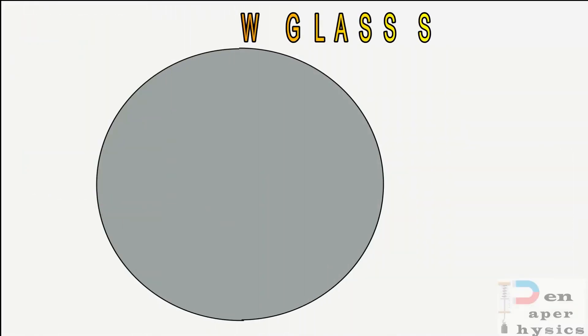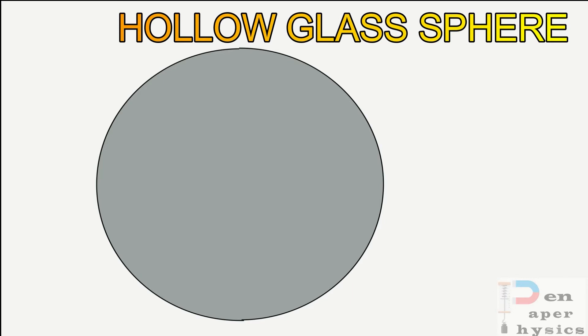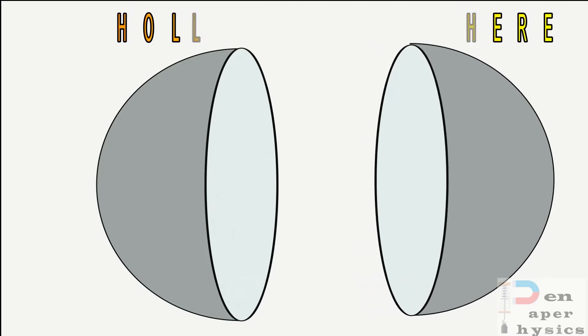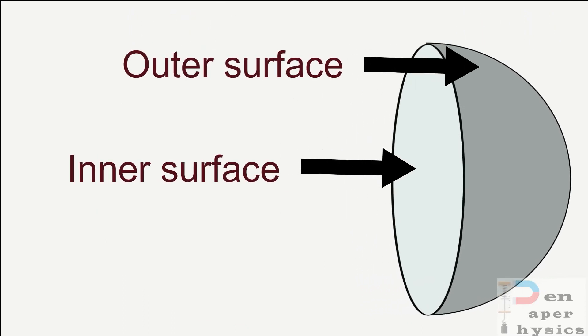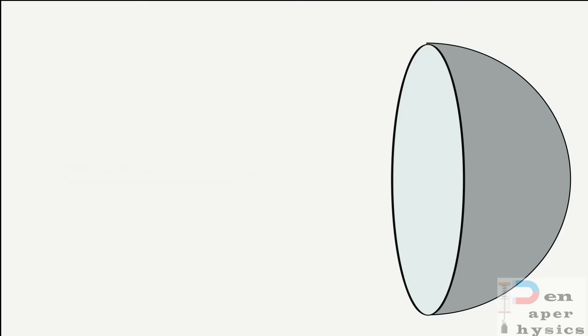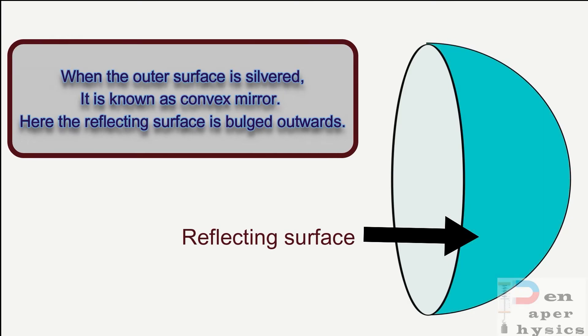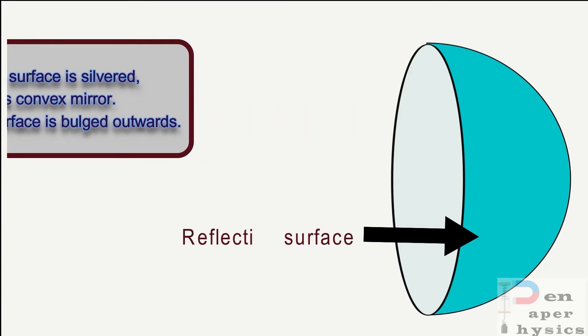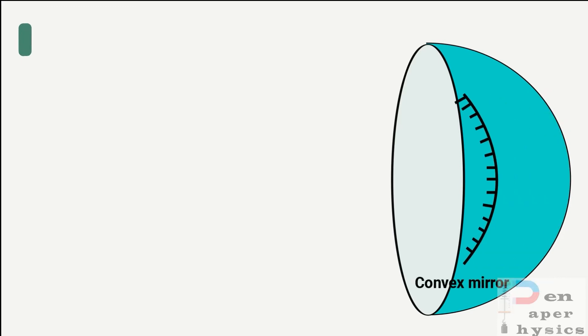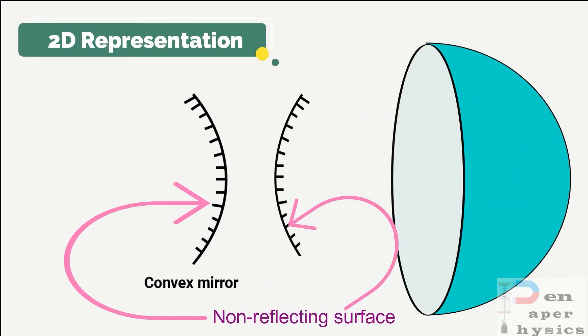Let us consider a hollow sphere as shown. This is a hollow glass sphere and we are cutting a part from it to make a spherical mirror. If the reflecting surface is bulged outward, then this mirror is called a convex mirror — the reflecting surface is pushed outward. Here I am showing you the 2D representation of a convex mirror, which can be drawn either way.